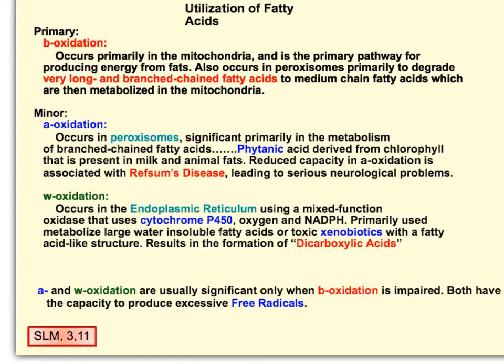Beta-oxidation is primarily in the mitochondria. Whenever you have a very long chain or branched fatty acid, it goes into the peroxisome first to be broken down into smaller chains. Peroxisomes are not just remnant organelles from our evolutionary past.